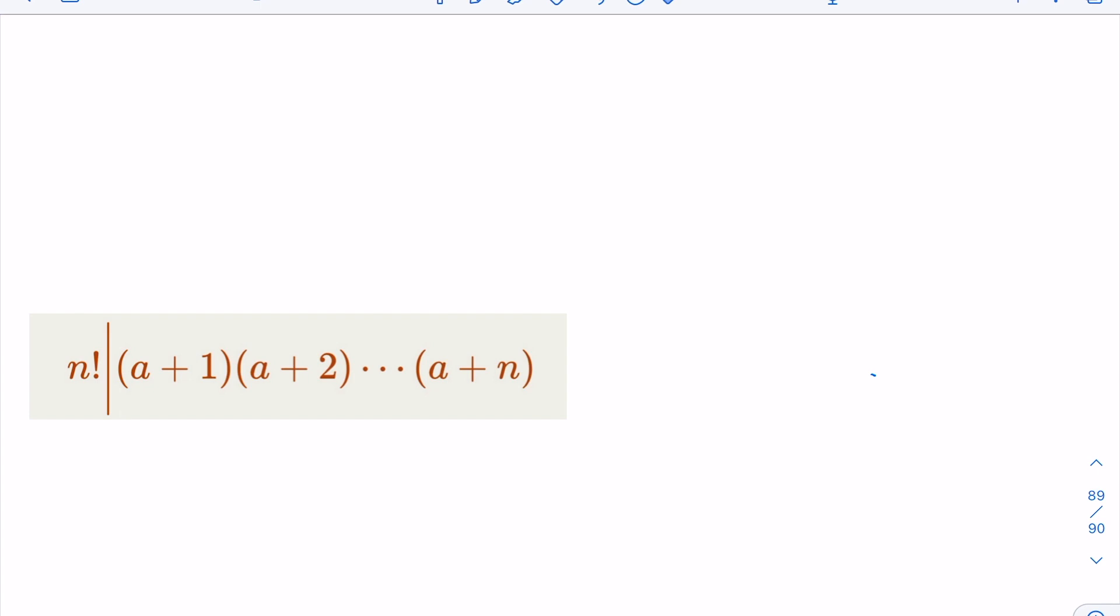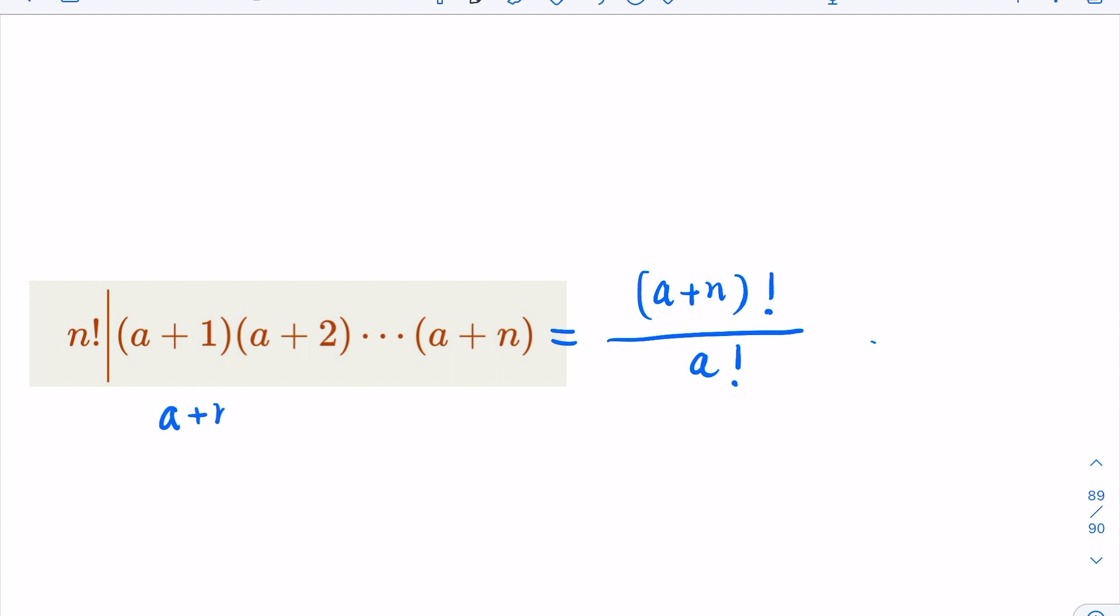So we're going to use this fact to argue the one we tried to prove. Now, notice that the right-hand side is a product of n numbers, but the right-hand side is actually equal to (a+n)! divided by a!. So we need to prove that this is a multiple of n factorial. Now, as a matter of fact, we're going to consider this number here.